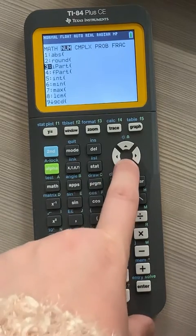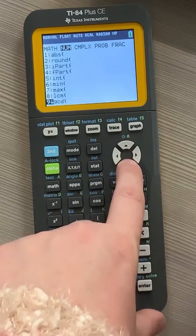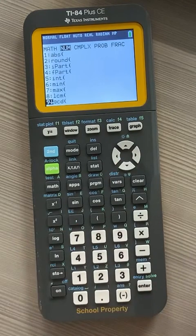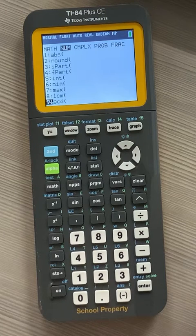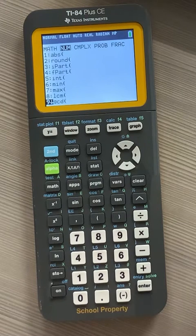Then scroll down to number 9, or you could just hit 9. That says G-C-D. That means greatest common divisor. Same thing as the greatest common factor.